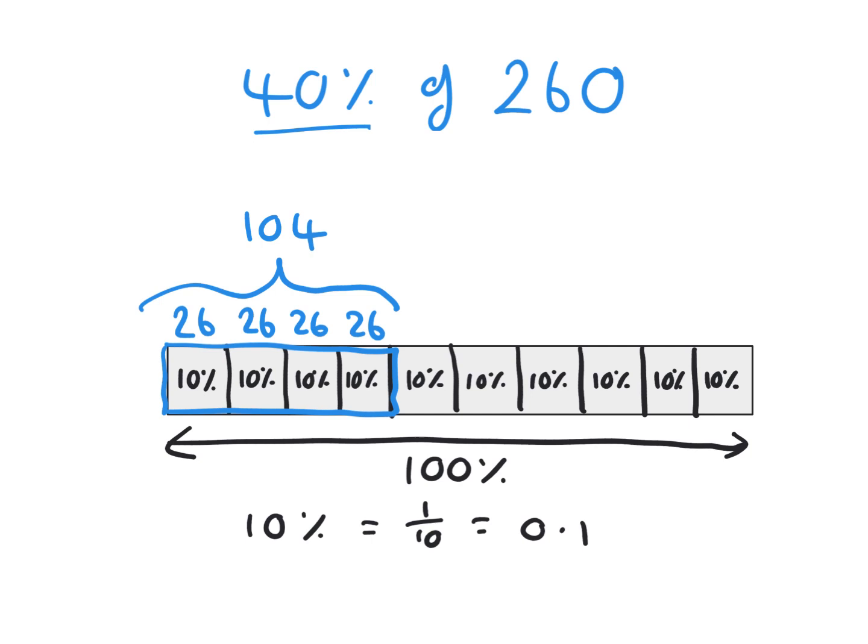And so if you wanted 50%, you just add another 10%, 60%, 70%, 80%, 90%. And of course, the 100% would be the full value, which in this case would be 260.